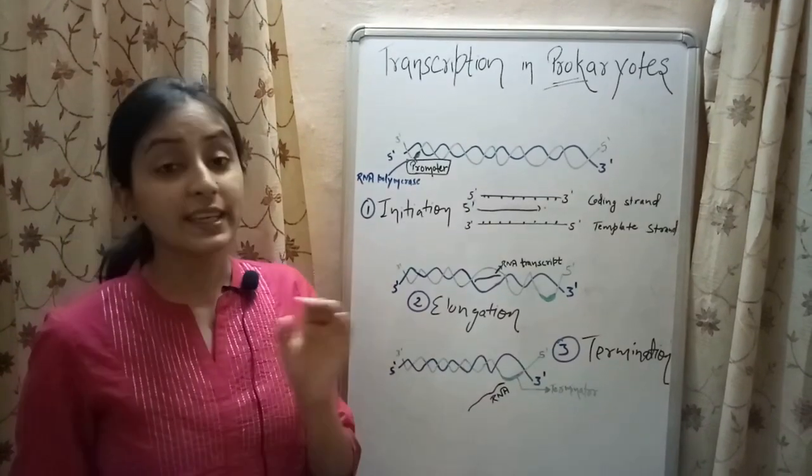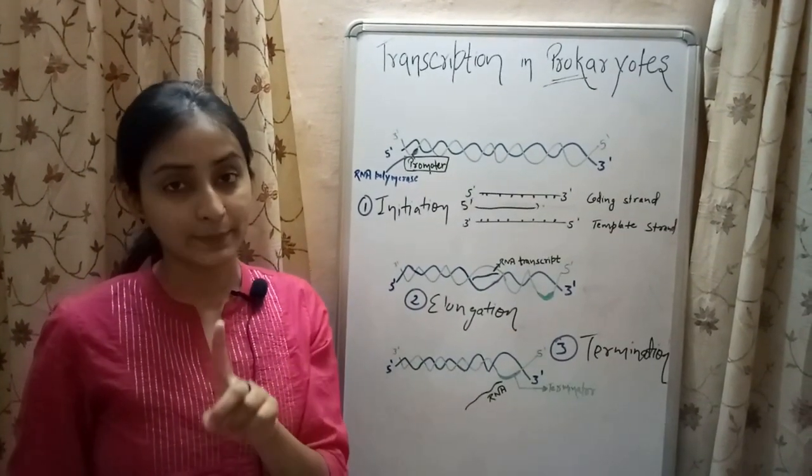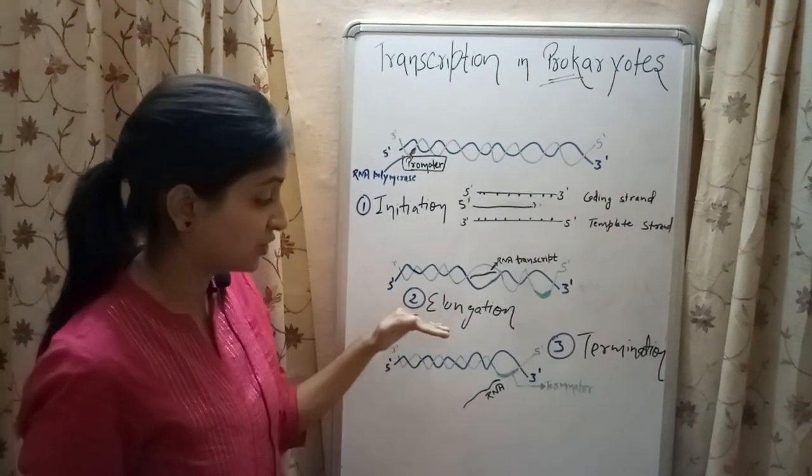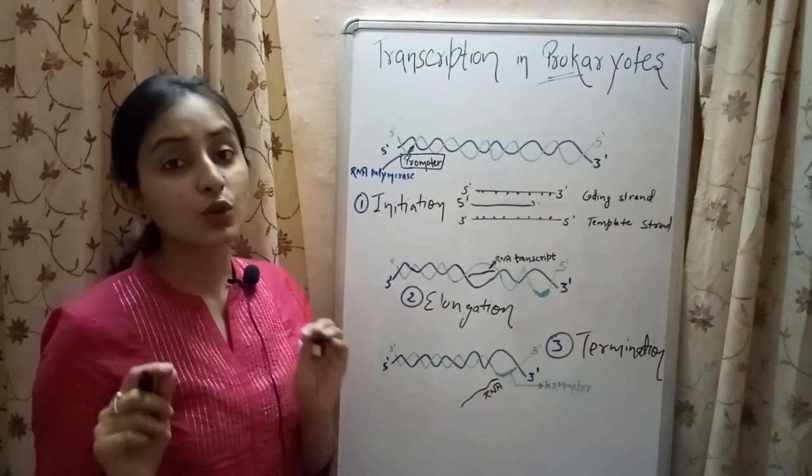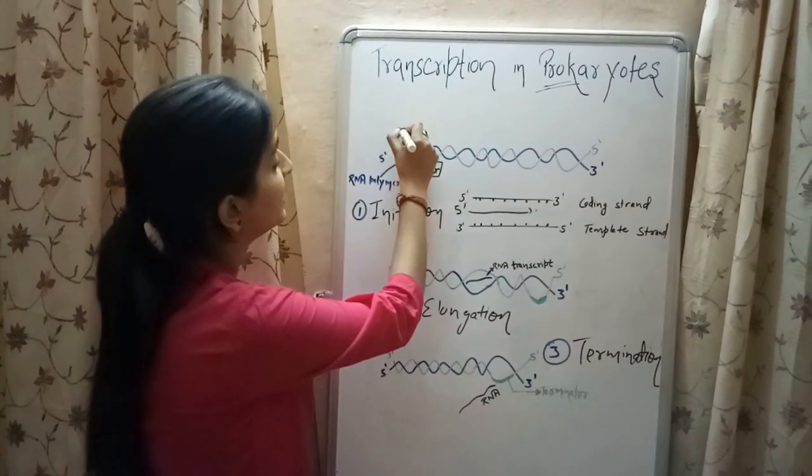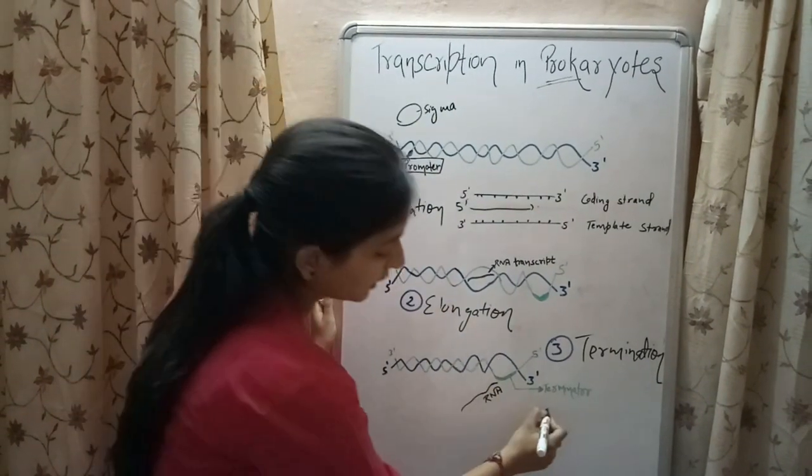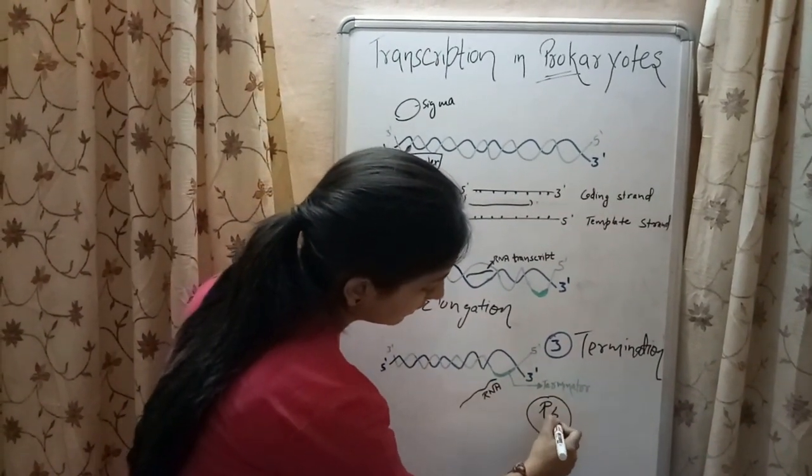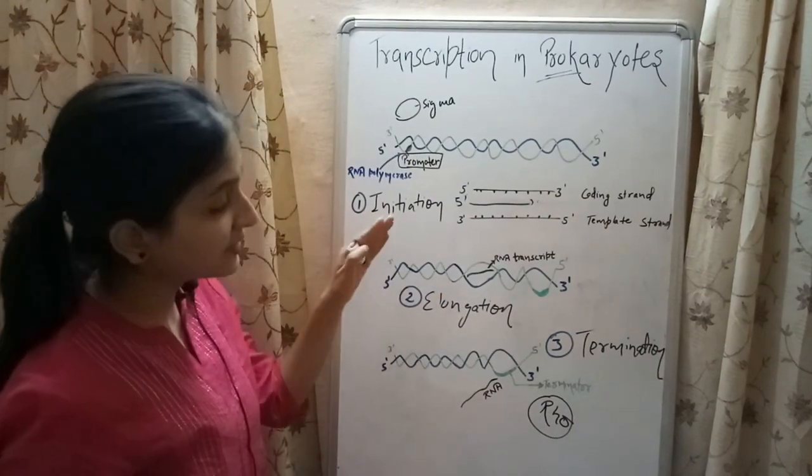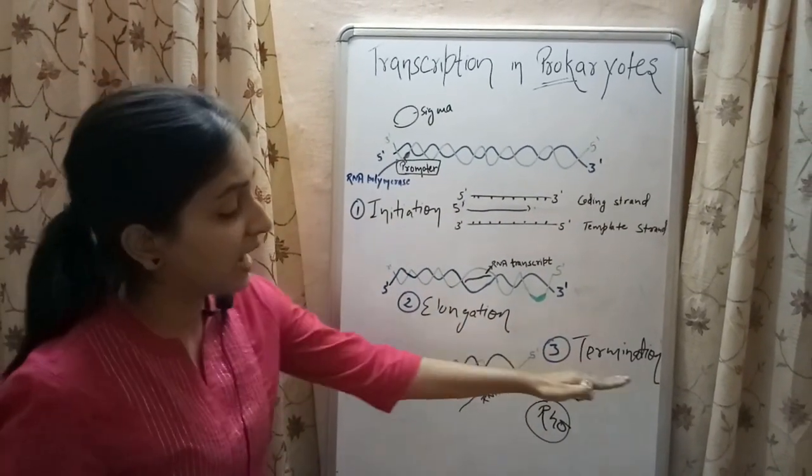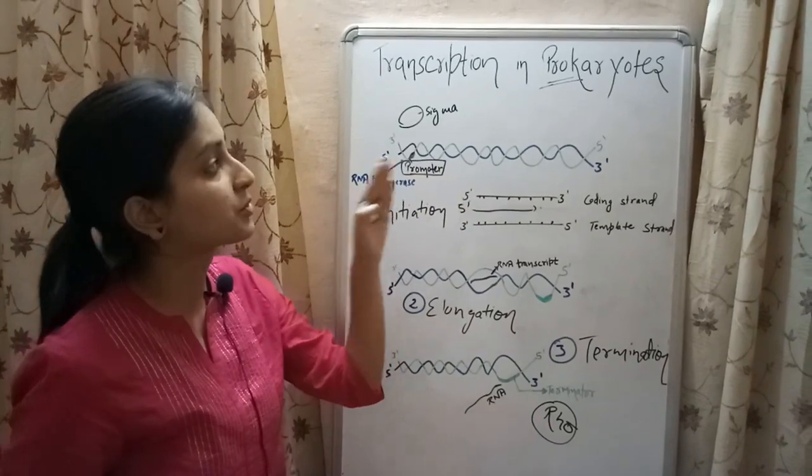RNA polymerase is actually capable of catalyzing only one step of transcription, and that is elongation. But due to the presence of initiation factor or sigma factor, and a termination factor called rho factor, the RNA polymerase also carries out initiation and termination steps of the transcription process.